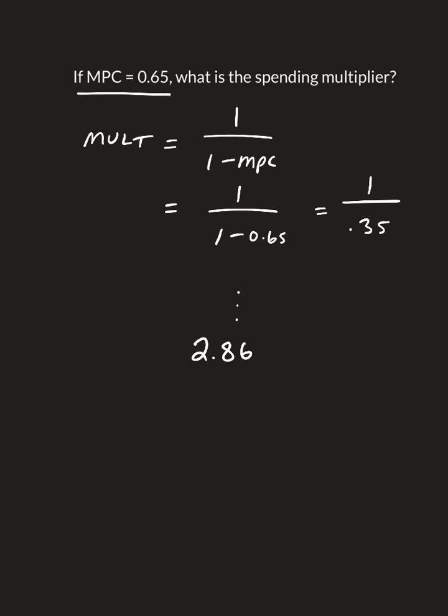And so what this is telling us is if any part of autonomous spending, so A-naught, which was that C-bar, I-bar, G-bar, MX-bar,